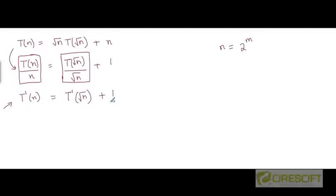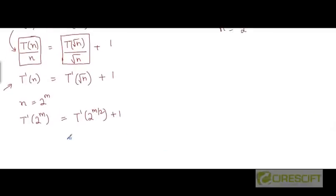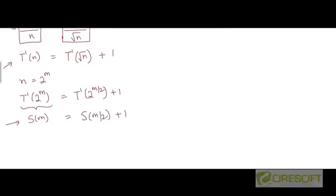Assuming this had been the original recurrence given to us, we would follow the standard approach from previous videos. We let n be 2 to the power m, so t prime of 2 to the power m equals t prime of 2 to the power m over 2, plus 1. Expressing t prime of 2 to the power m as s of m, the right hand side becomes s of m over 2 plus 1. So we obtain the recurrence: s of m equals s of m over 2 plus 1.